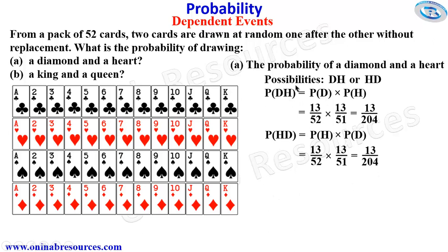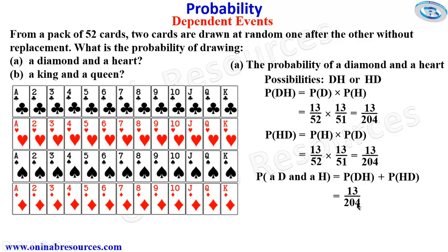We then go ahead to find the probability of picking a diamond and a hat. It is going to be the sum of the probabilities of the two possibilities — the probability of picking the first one diamond and the second one hat, plus the probability of picking the first one hat and the second one diamond. That gives 13 over 204 plus 13 over 204. Since the denominators are equal, we just add the numerators to give us 26 over 204, and in simplest form we have it as 13 over 102, which is the probability of picking a diamond and a hat.